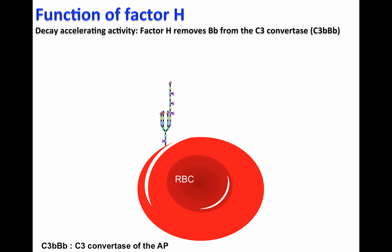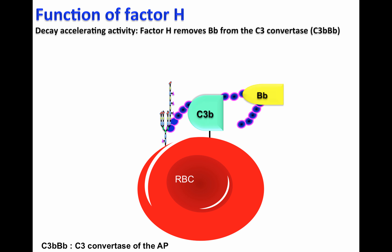Factor H also possesses another function: it has a decay accelerating activity, which means that if the C3 convertase of the alternative pathway is formed on the cell surface of red blood cells, Factor H will be able to bind to the polyanion and C3B, and in addition to that, will be able to remove or displace Bb from the C3 convertase. Therefore, Factor H is accelerating the decay of the C3 convertase, and as a consequence, it is protecting the red blood cells from being lysed.